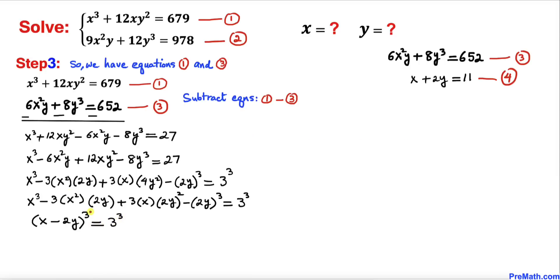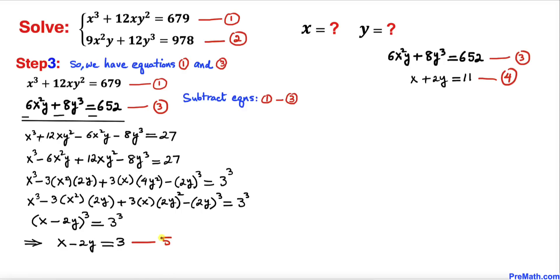Once again our exponents are the same on both sides, so we can equate the bases. Therefore x − 2y = 3. Let's call this equation number five.